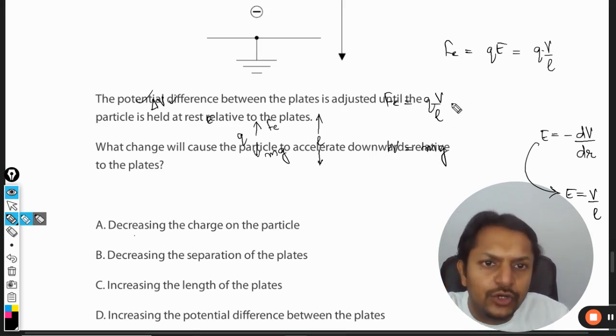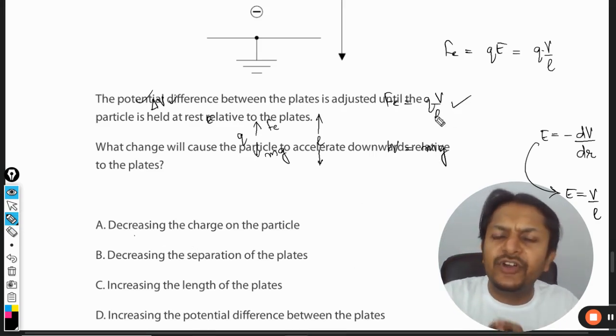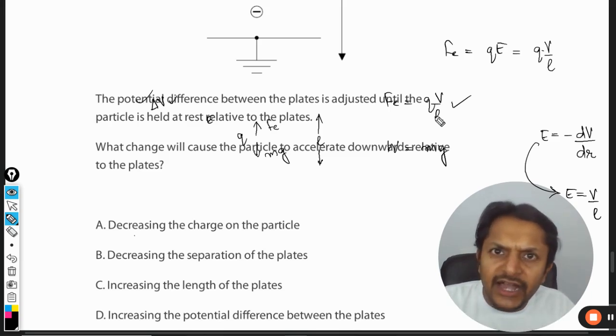Decreasing the charge on the particle. If you are decreasing the charge, the upward force is decreased and the downward force is constant - weight is going to be constant. So this is definitely going to be correct.